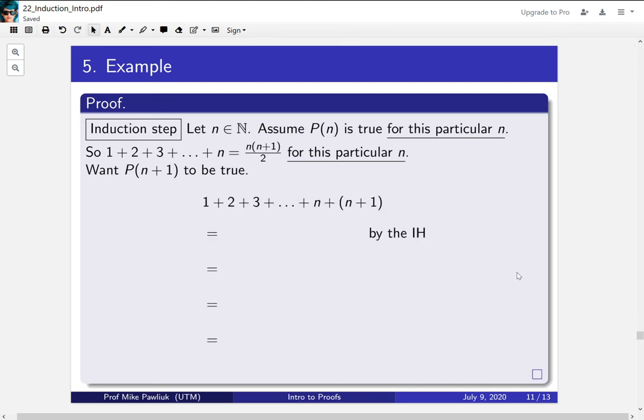So the left-hand side of what we want is 1 + 2 + 3 + ... + n + (n+1). And we know that the sum of the first n terms can be replaced by this formula. So let's do that. So I replaced the first n terms with what it is because we're assuming that to be true.